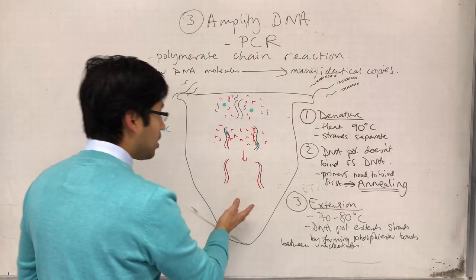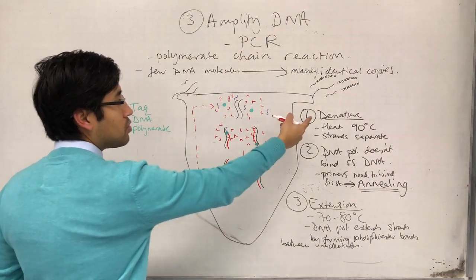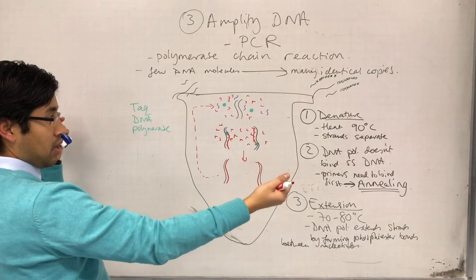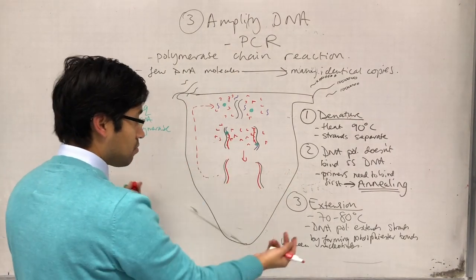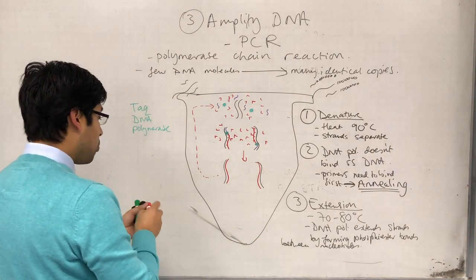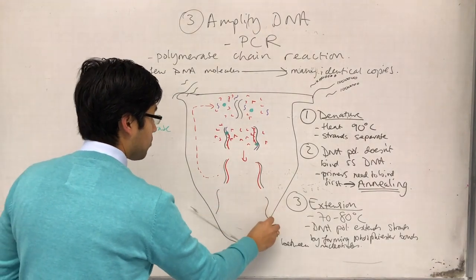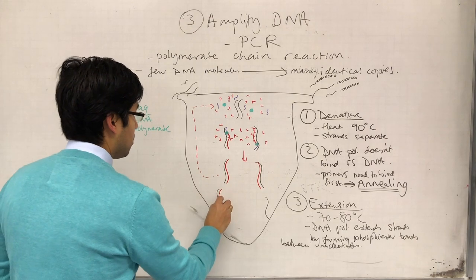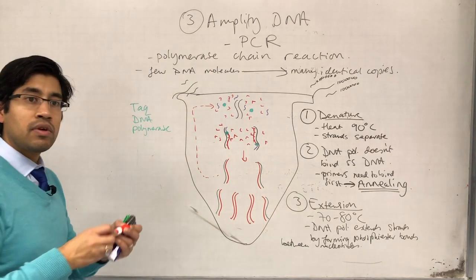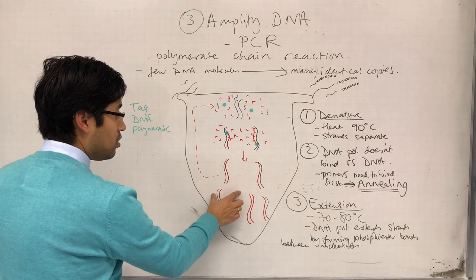Okay. And then, all that the machine does is take it back to the denature stage, where now, for both of these molecules, they're both going to separate. A new strand will be made using each strand as a template again, and so we'll end up, after the second cycle, we'll end up with four molecules of DNA. So, each of these is going to separate and a new strand will be made.